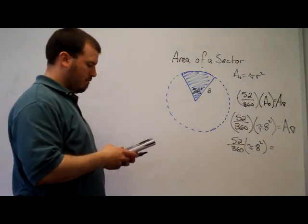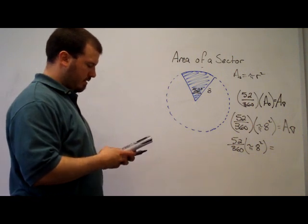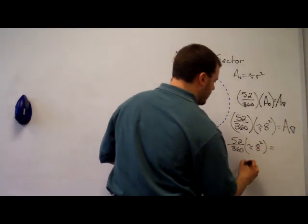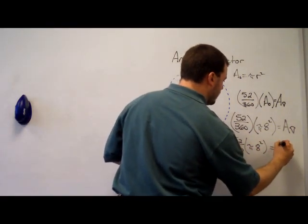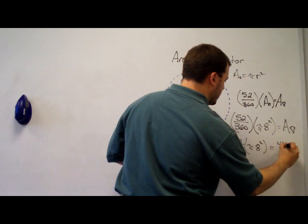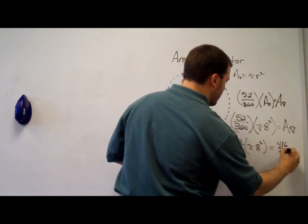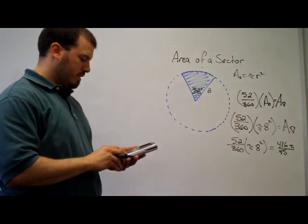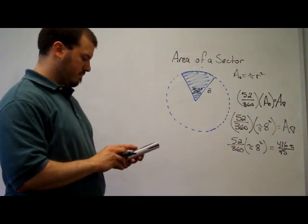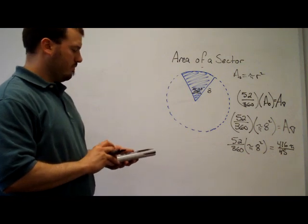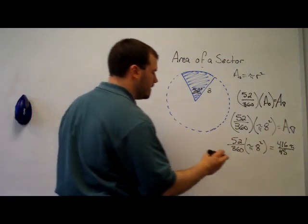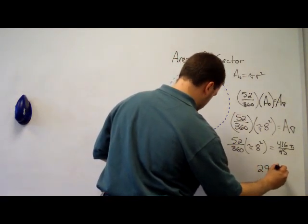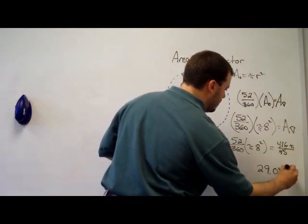52 times 64 divided by 360 is 416 over 45 times pi. You can get that as a decimal if you want. And that's approximately 29.04 units squared.